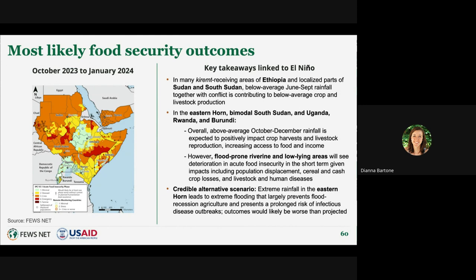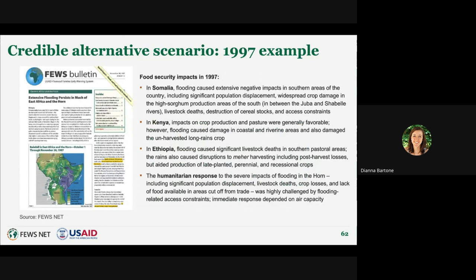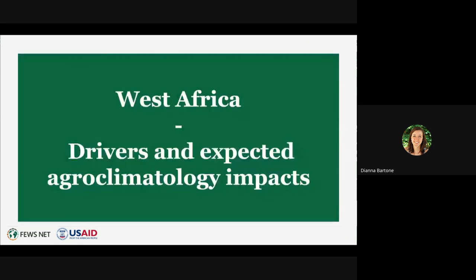If we see a worst-case scenario where rainfall is even heavier than currently projected, this would lead to worse food security outcomes than currently mapped. A reference to food security impacts of severe flooding in 1997 provides context for what we might see should a worst-case scenario manifest. With that, handing over to Al-Khalil for West Africa.